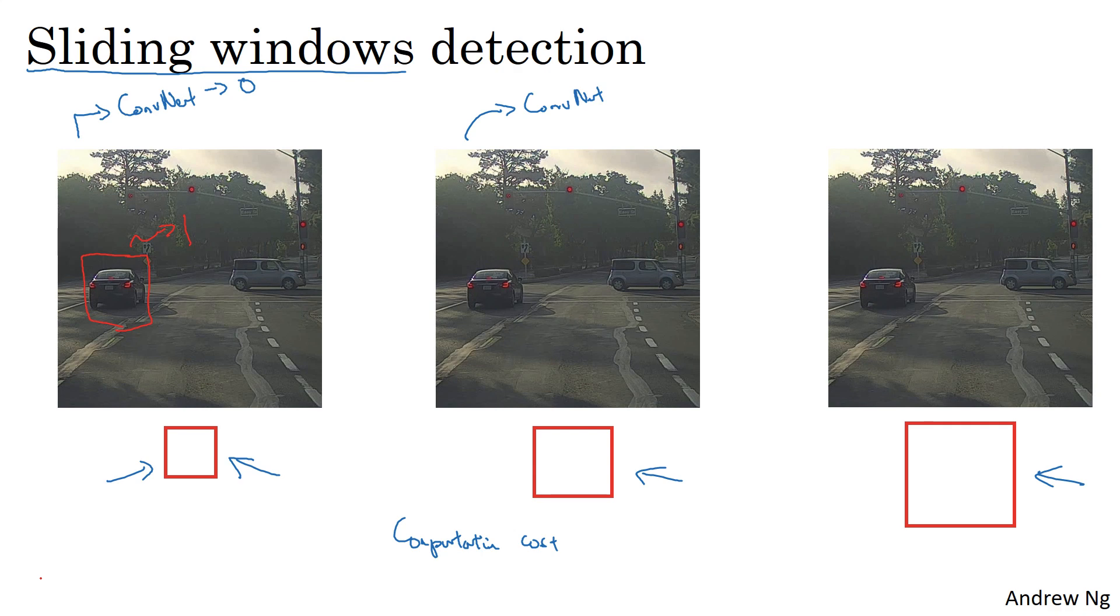Whereas if you use a very fine granularity or a very small stride, then the huge number of all these little regions you're passing through the ConvNet means there's a very high computational cost. Before the rise of neural networks, people used much simpler classifiers, like a simple linear classifier over hand-engineered features, to perform object detection. In that era, because each classifier was relatively cheap to compute, sliding windows detection ran okay.